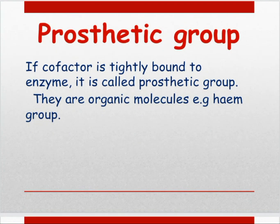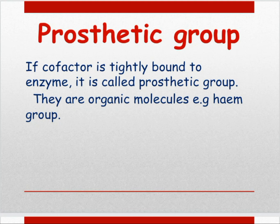Prosthetic group: if a co-factor is tightly bound to an enzyme, it is called a prosthetic group. They are organic molecules, for example the haem group. The prosthetic group is also organic, made up of carbon, and is tightly bound to the enzyme. So, if a co-factor is loosely bound it is called a co-enzyme, and if it is tightly bound it is called a prosthetic group.